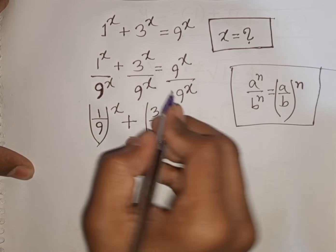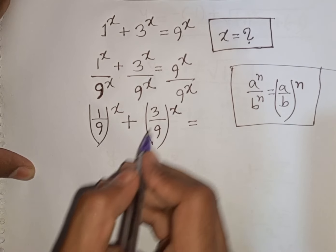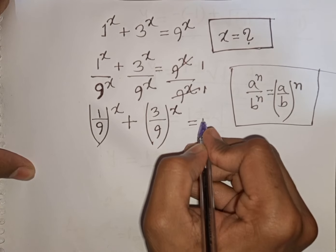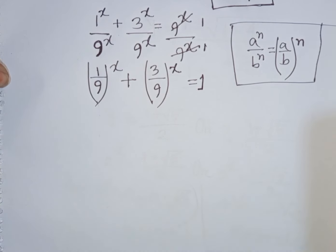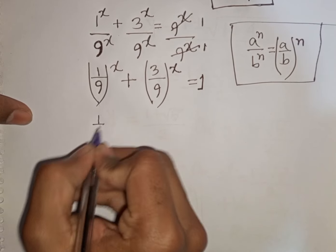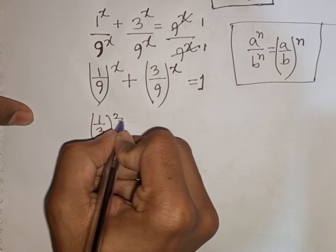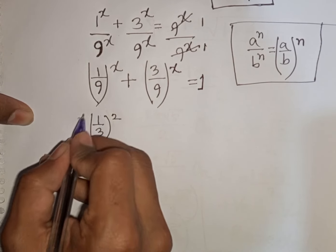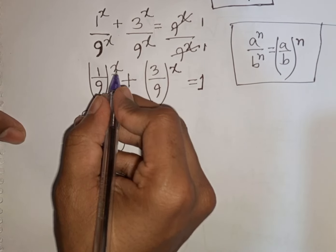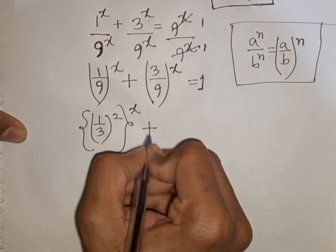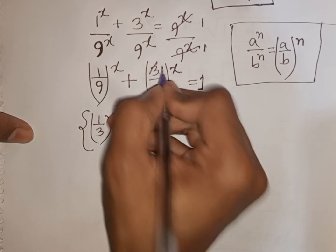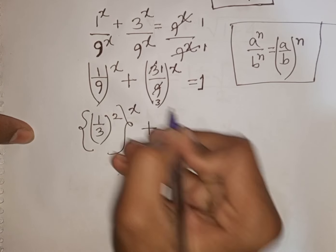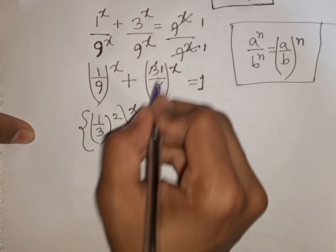The right side 9^x / 9^x cancels to 1. Now 1/9 can be written as (1/3)^2, so (1/9)^x = (1/3)^(2x). And 3/9 = 1/3, so (3/9)^x = (1/3)^x.